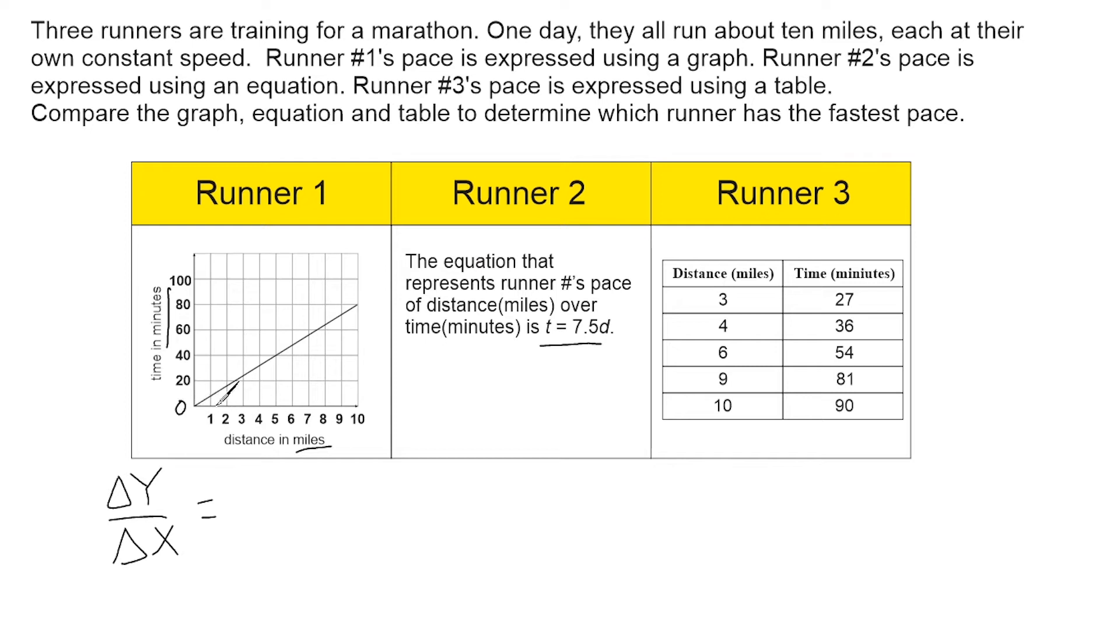Now I could look here at one mile and go up to the line and try to figure out how many minutes it took that runner to run one mile, but we cannot clearly see what that value is. So what I'm going to do is go along the line and find one clearly defined point, which there is one right here. And that point is located at 5,40. So we are going to take the y value, which is 40, and divide by 5.